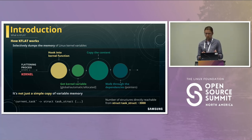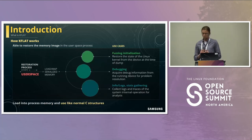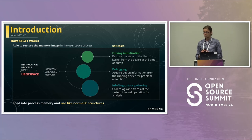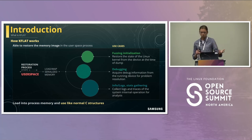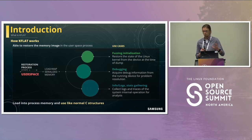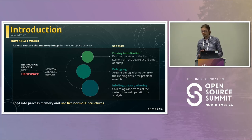Once we deal with all these aspects, we end up with an easy-to-use and portable memory dump. Such a memory dump can then be loaded or mapped into a new application, into a new virtual address space, and used like any other C memory. We can use it for fuzzing initialization — dump some memory from a normally running system and use it as an initial corpus for a fuzzer. We can use it for debugging, viewing internal kernel structures in user space just like KGDB, without recompiling the kernel or using additional hardware. Finally, we can use it for info, stats, and metrics gathering.